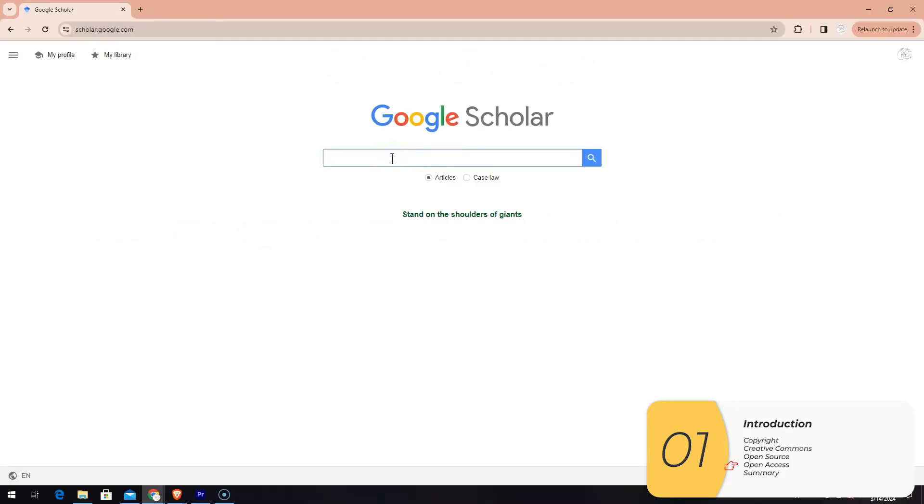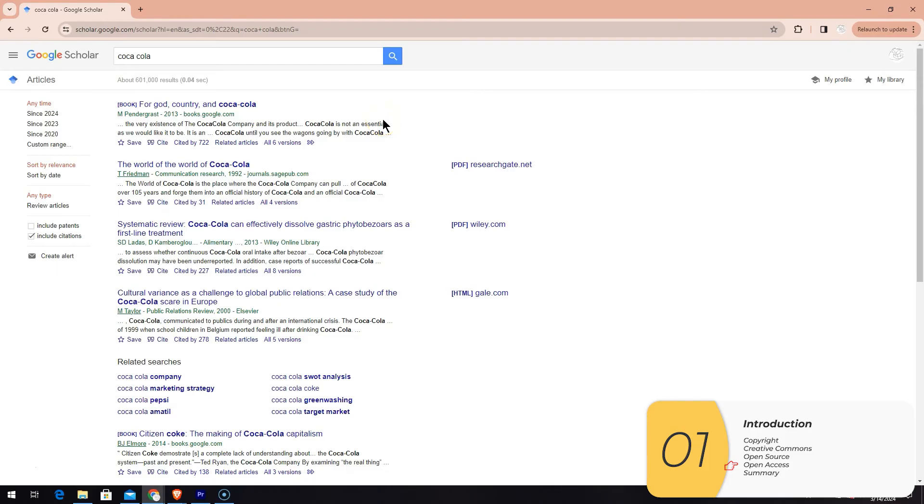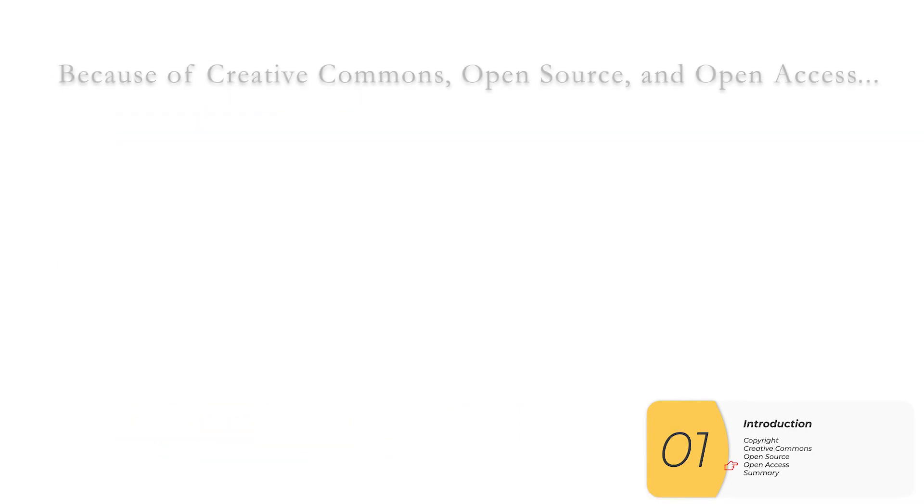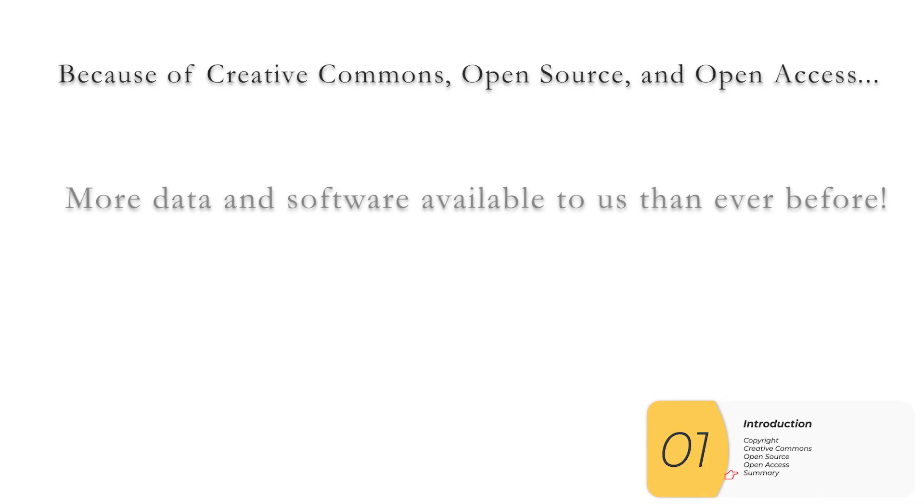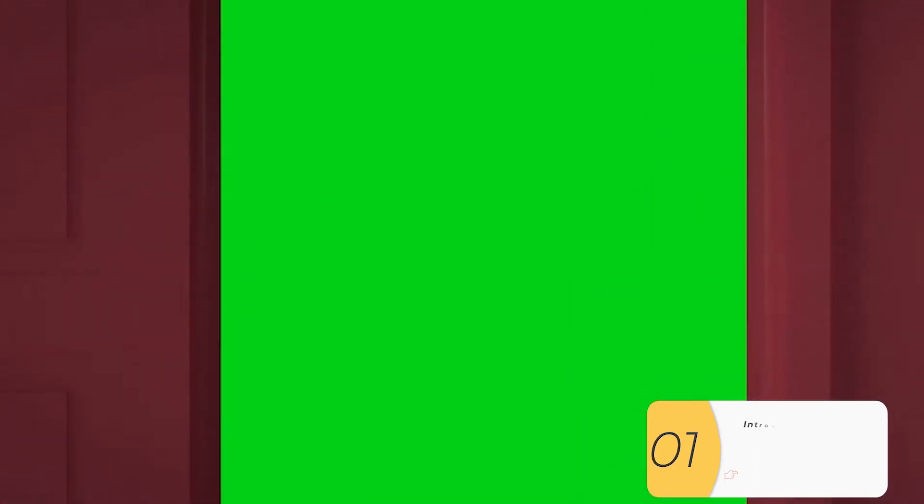The third method that AP board wants us to know about is called open access. Open access is free and open access to academic information. So here's an example. This is Google Scholar. I'm going to search for Coca-Cola. It's going to come up with all these academic articles about Coca-Cola in scientific journals. So the bottom line here is because of Creative Commons, open source, and open access, we have more data and software available to us than ever before through the wonders of the internet.